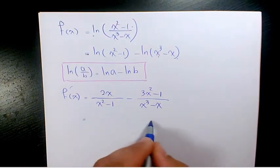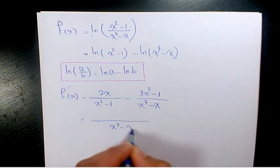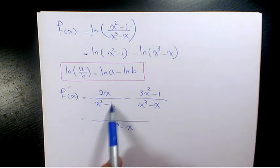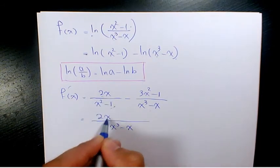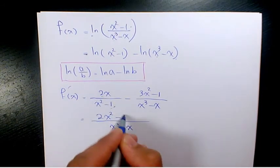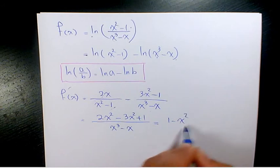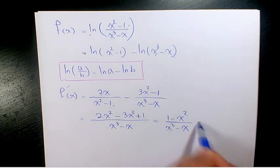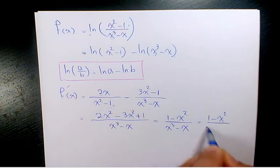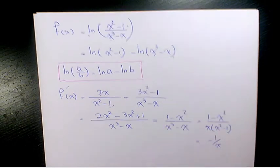Then if you want to simplify further, you get a common denominator of x cubed minus x. Multiplying through gives 2x squared minus 3x squared in the numerator, and negative x plus x, so it's going to be 1 minus x squared over x cubed minus x. Then if you factor out x, you get x squared minus 1, and it simplifies to negative 1 over x.